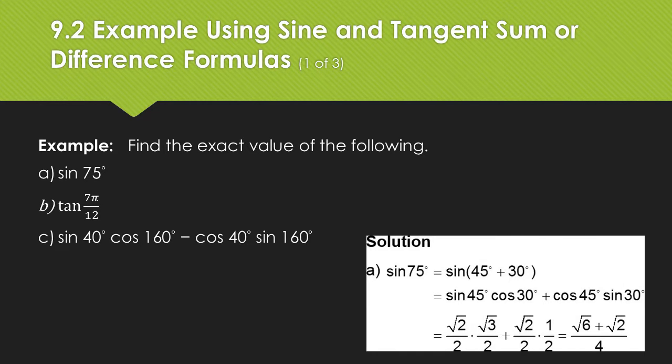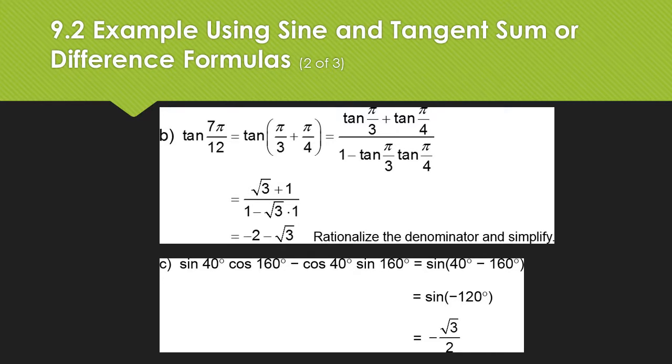Sine of 75, we're using 45 plus 30. Again, not necessarily the only way to do it, but probably the easiest way. We get the sine and cosine for those and just put them in the formula. For sine of 7 pi over 12, we're going to use pi over 3 plus pi over 4. Then just put them into the formula. Finally, for C, we realize that sine 40 cosine 160 minus cosine 40 sine 160 is the formula for the sine of the difference of two angles. So it's the sine of 40 minus 160, which gives us the sine of negative 120, which is negative square root of 3 over 2.